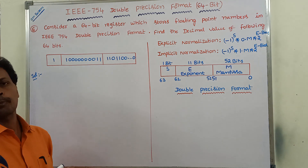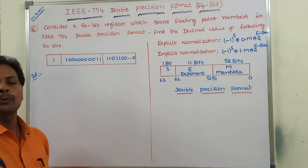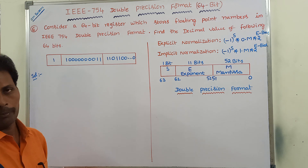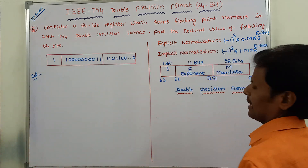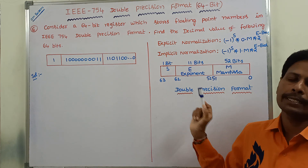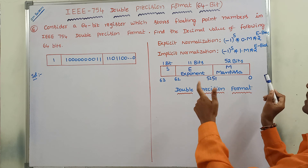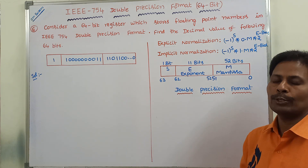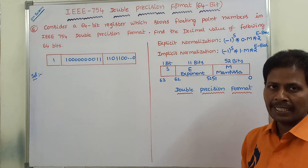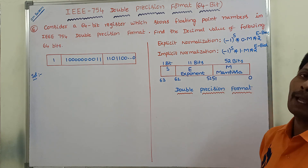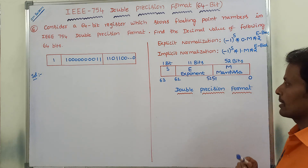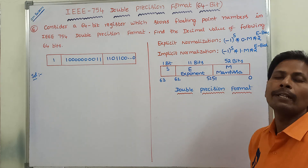Before solving this problem, first of all we have to know about IEEE 754 double precision format. It contains 64 bits, starting with 0 and ending with 63. These 64 bits can be divided into 3 fields. The first field is called mantissa, denoted by capital M. 52 bits are allocated for mantissa, starting with 0 and ending with 51.